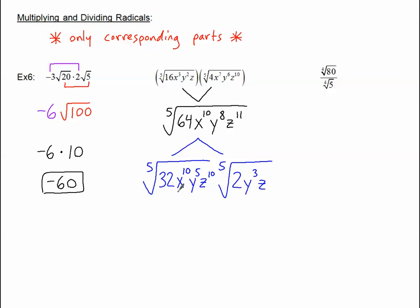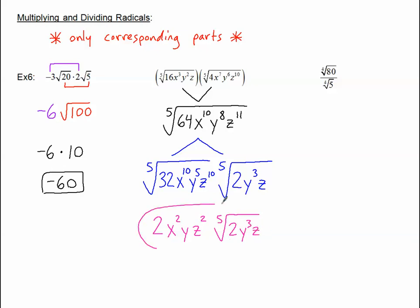So all of these should be perfect fifths and they should be able to escape. The fifth root of 32 is 2. The fifth root of X to the 10th is X squared. The fifth root of Y to the 5th is Y. And the fifth root of Z to the 10th is Z squared. And then of course I have my fifth root — nothing's going to change the rest of the stuff. We practiced that in the last tutorial, and here we are doing it again. So that's multiplying — corresponding parts.